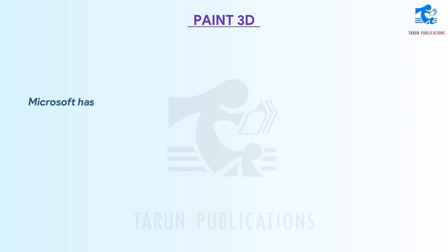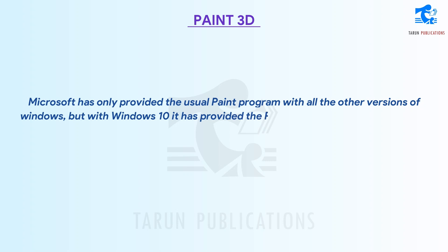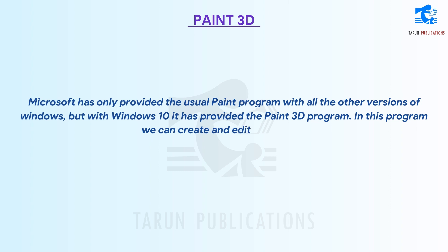Microsoft has only provided the usual Paint program with all the other versions of Windows, but with Windows 10 it has provided the Paint 3D program. In this program we can create and edit 3D images.